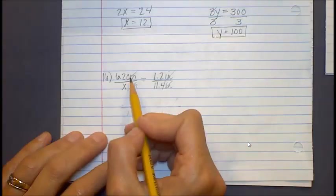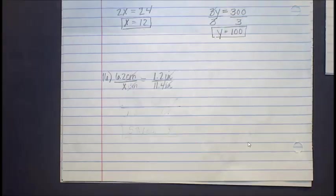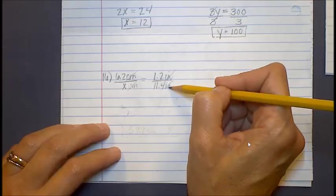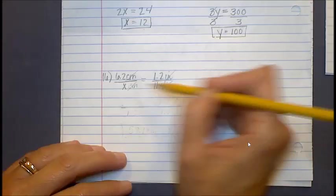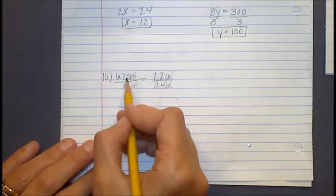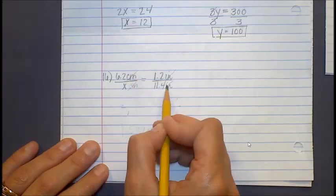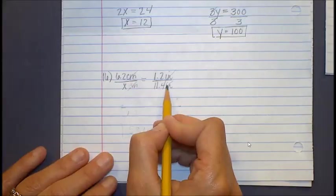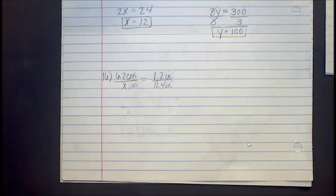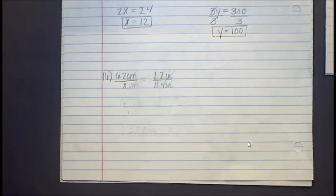So if we know, and really what we're saying is we know that 6.2 centimeters over something is going to be equal to the same proportion as 1.2 over 11.4. So we want to know, well, how many centimeters is that on the bottom there? You know, what is the larger number? So we're going to do the same process the way we set it up. We're going to take 6.2 centimeters times, in this case, 11.4 inches. But again, I'm not worried about those units. I'm just going to set it up.